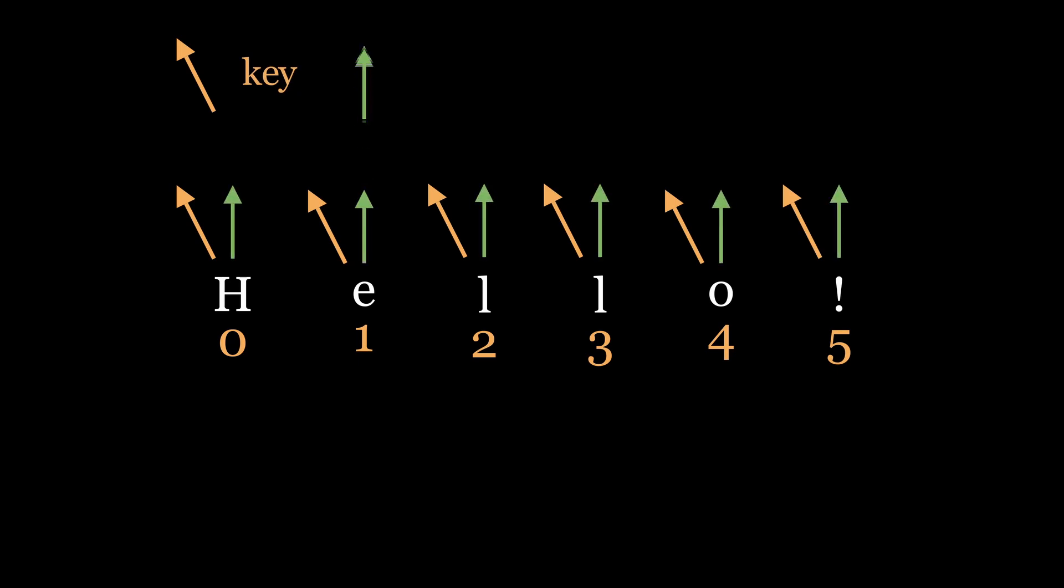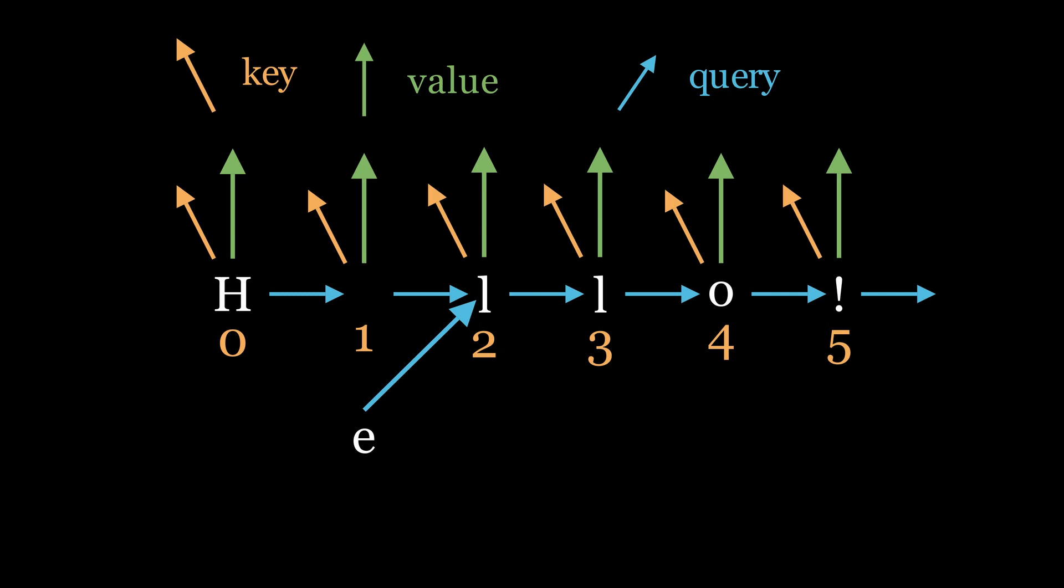Each character also has a second vector called the value, which is another vector representation of the character as well as its position, but its shape is a little bit different so that it allows us to do matrix multiplication eventually with the third vector, which is called the query. The query each character has is essentially the next character that the current character is looking for. For example, for Hello World, the query for E could be looking for an L or two Ls.